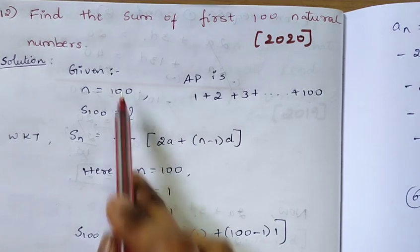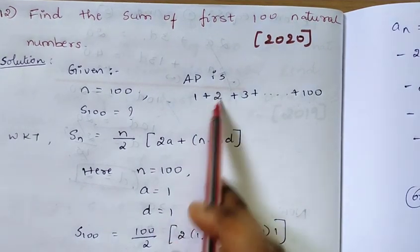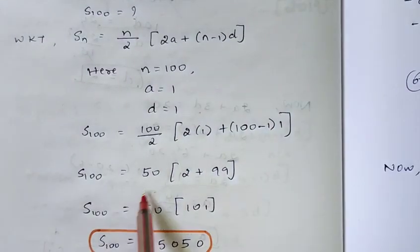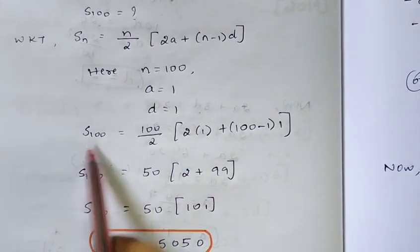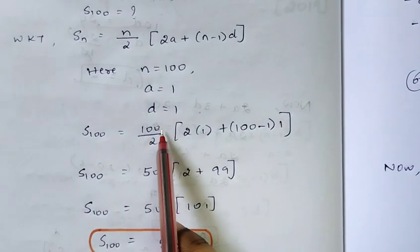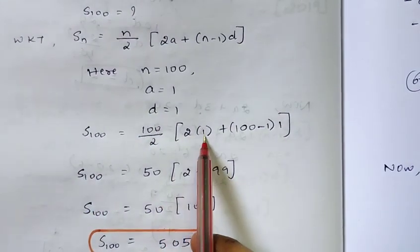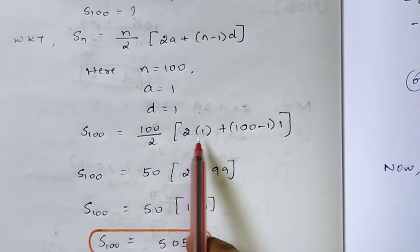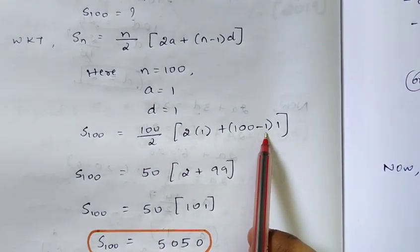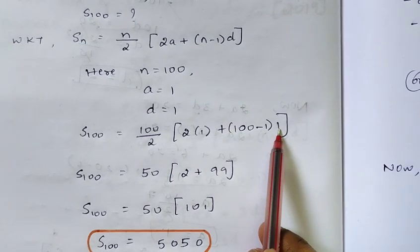Here, n = 100, a = 1, and d = 1. Substituting the values into the formula: S100 is equal to 100 by 2 into 2 times 1 plus 100 minus 1 into d, where the value of d is 1.